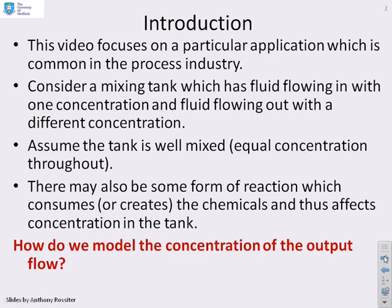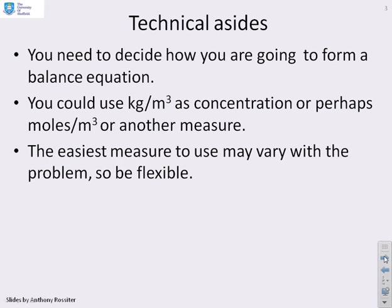What we want to know is: with all these different things going on, how do we model the concentration of the output flow? If we can model its concentration, then we have some hope of controlling it and making sure we get what we want. We're going to need to decide what balance equation to use — either kilograms per metre cubed (mass concentration) or moles per metre cubed (molar concentration). The easiest one to use may vary by problem, so always be flexible.